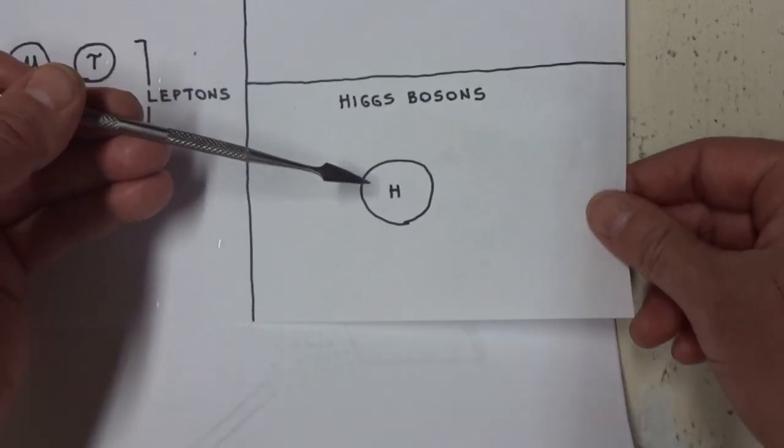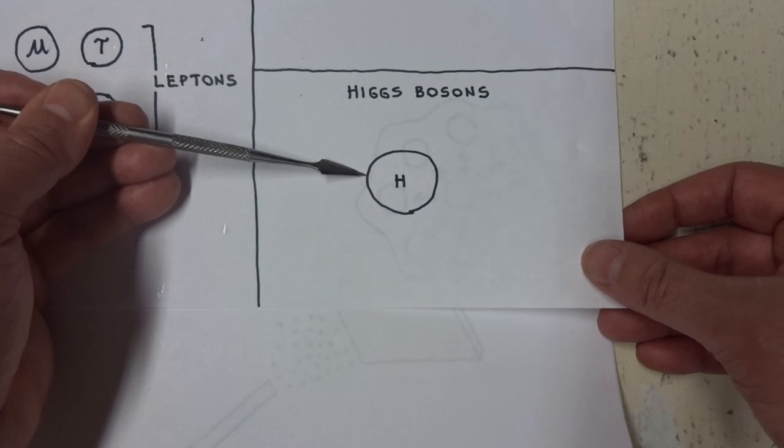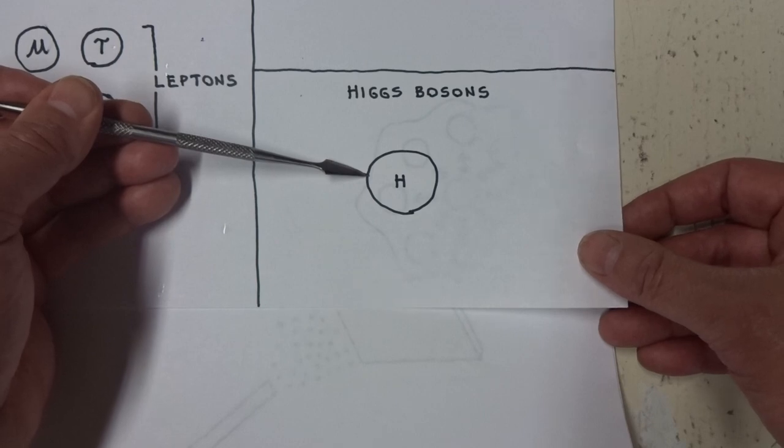Gravity is the weakest force of all. The other particle, which became a celebrity in 2012 when it was discovered, is the Higgs boson.